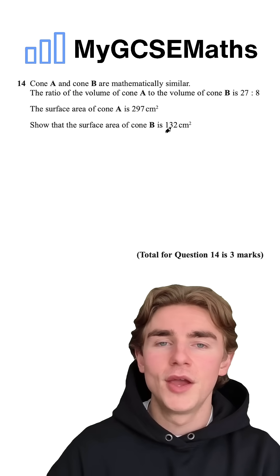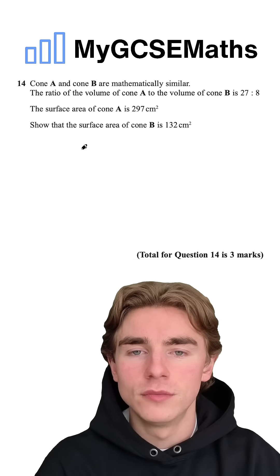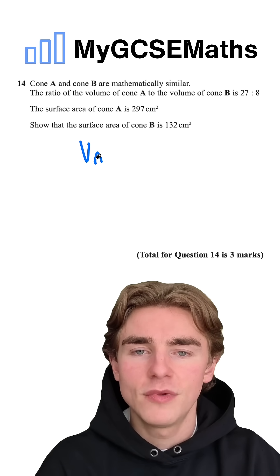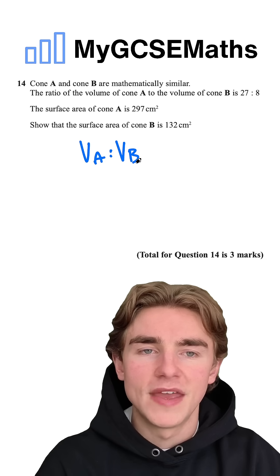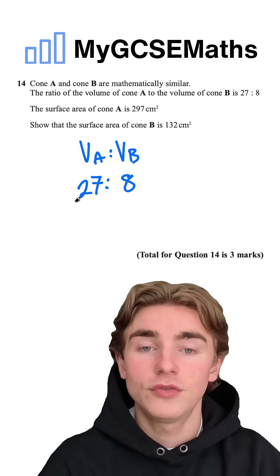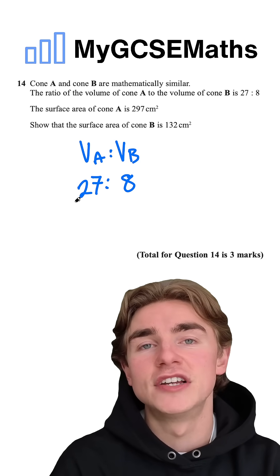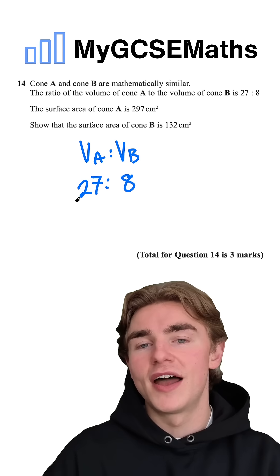What are we going to do? Well, we've been given our ratio for the volumes. The volume of A to the volume of B is 27 to 8. We're going to use this to find firstly the ratio in side lengths and then the ratio in areas, then we can apply that.